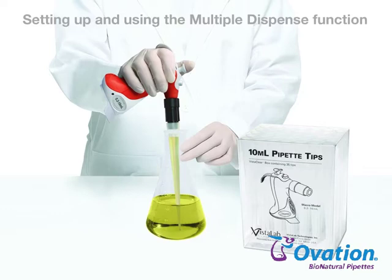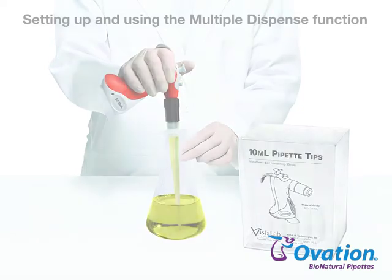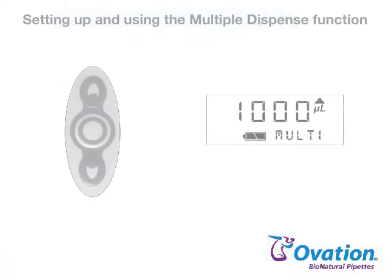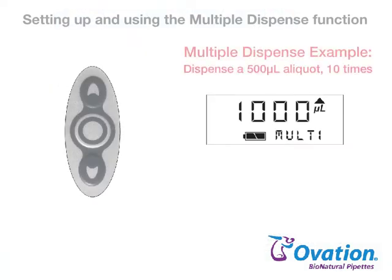To set up and run a multiple dispense liquid handling function, follow these steps. For this example, we will dispense a 500 µL aliquot 10 times.